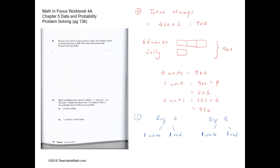Problem solving question two: Eduardo has three times as many stems as Sally. The average number of stems they have is 450, so the total number of stems they have is 900. Using bar modeling, Eduardo has three units and Sally has one unit, since Eduardo has three times as many.